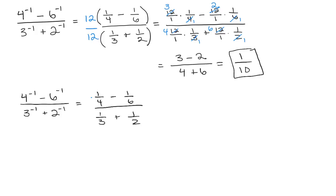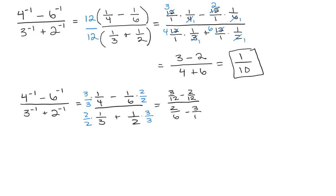The common denominator is twelve in the numerator. I need to multiply one-fourth by three over three, and one-sixth by two over two. For the denominator, the least common denominator is six, so I multiply one-third by two over two, and one-half by three over three. That gives me three-twelfths minus two-twelfths in the numerator, and in the denominator two-sixths plus three-sixths.